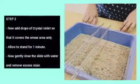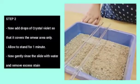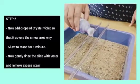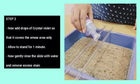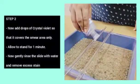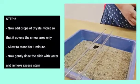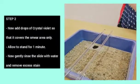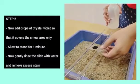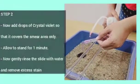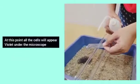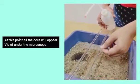Step 2. Now, add drops of crystal violet so that it covers the smear area only. Allow it to stand for 1 minute. Gently rinse the slide with water and remove the excess stain. At this point, all the cells will appear violet under the microscope.